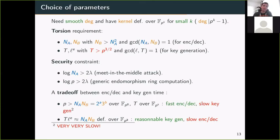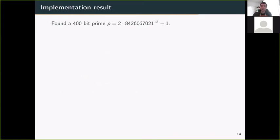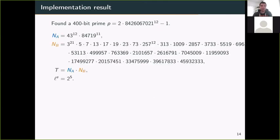We did this for 128 bits of security and obtained a 400-bit prime p of this form with the following factors. You can see, for instance, there are a lot of very big factors in Nb, which is what slows down the computation and the decryption mechanism in particular.